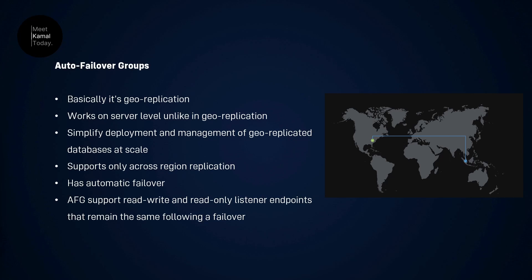Autofailover groups only support cross-region replication. If you want replicated databases within the same region you can still use geo-replication. Unlike geo-replication, with autofailover groups you can achieve automatic failover. One of the most important features is that autofailover groups support read-write and read-only listener endpoints. When a failover occurs, these listener endpoints will not change, which increases business continuity.